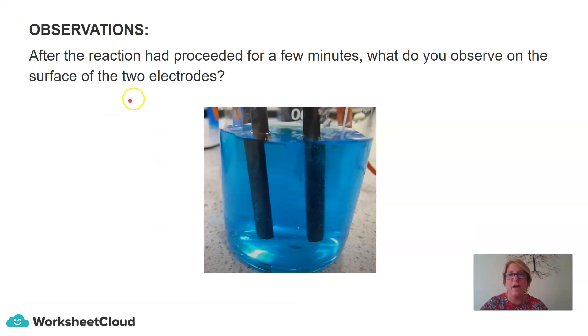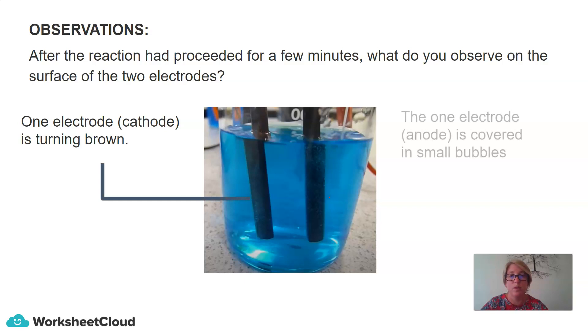So after the reaction had proceeded for a few minutes, what do you observe on the surface of the two electrodes? One electrode was turning brown and we called that electrode the cathode. And the one electrode, the anode, began to be covered in small bubbles.